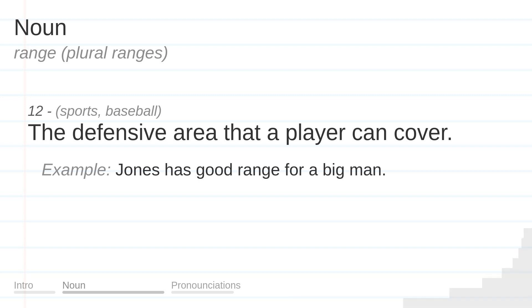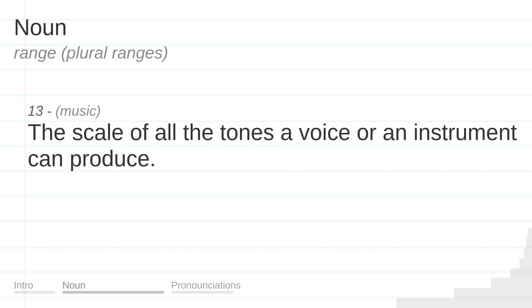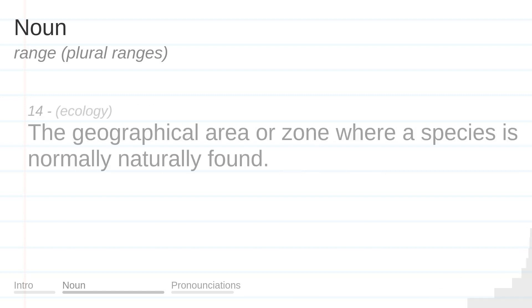The defensive area that a player can cover. Example: Jones has good range for a big man. The scale of all the tones a voice or an instrument can produce. The geographical area or zone where a species is normally naturally found.